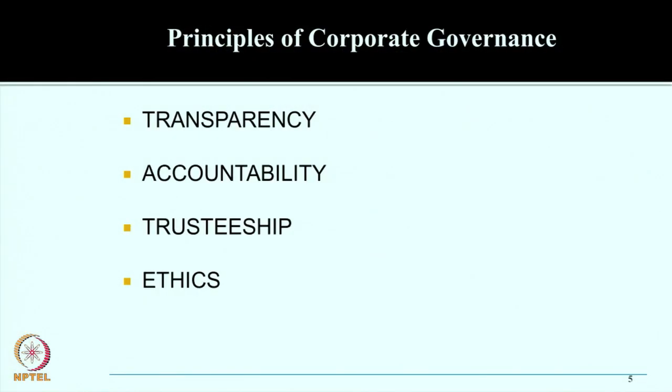These are the main principles of corporate governance: transparency, accountability, trusteeship, and ethics. Transparency is important because shareholders are far away, lenders are at one place, and customers are elsewhere — they all want to know about the company. The company should run its affairs such that necessary information is available to all. The board of directors should not show partiality by keeping some stakeholders informed while others are kept in the dark. One essential principle is transparent operations or a transparent governance system.